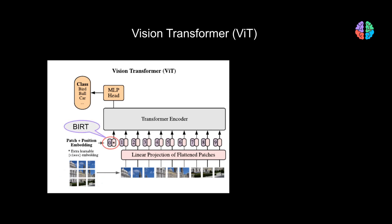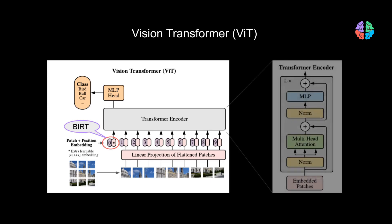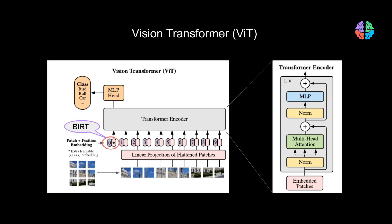You can notice an additional input to the transformer, which is the class embeddings — an idea purely inspired by the BERT model. The encoder is pretty much the encoder from the standard transformer architecture: multi-headed attention and multi-layer perceptron coupled with layer normalization. Lastly, a classification head is attached to the output of the transformer, from which you actually get the output classes from the network.